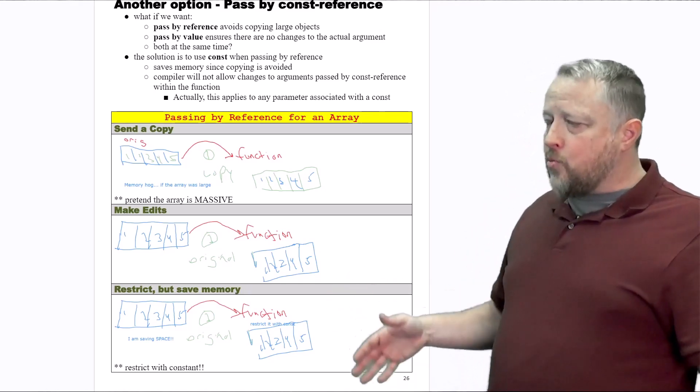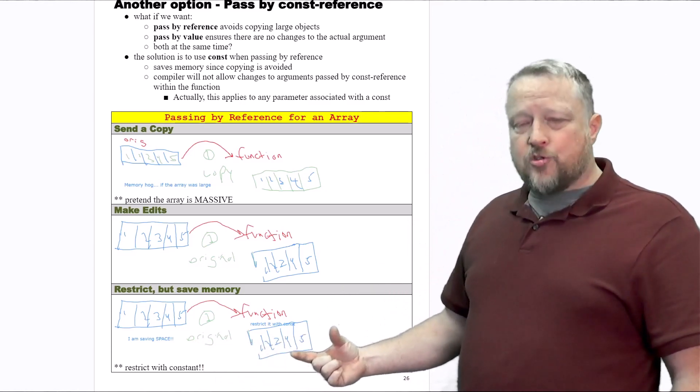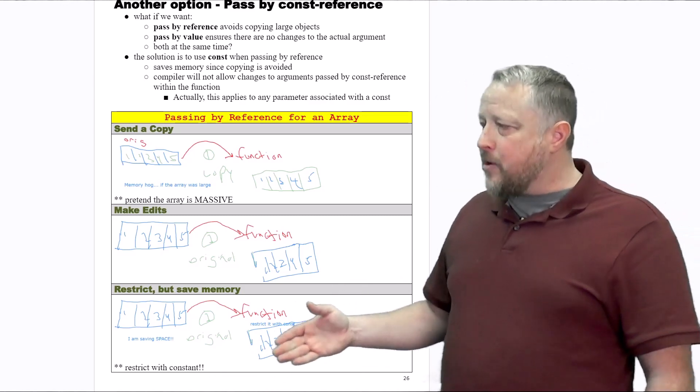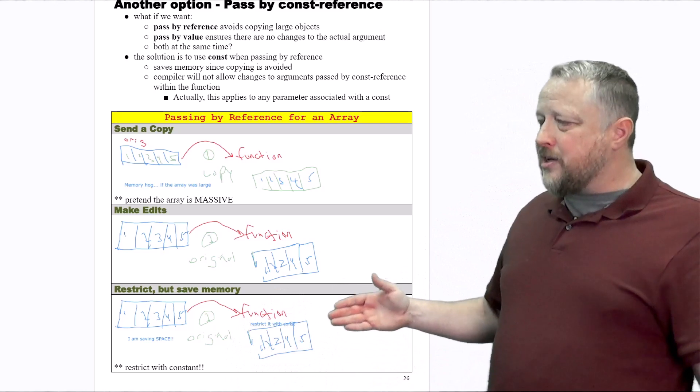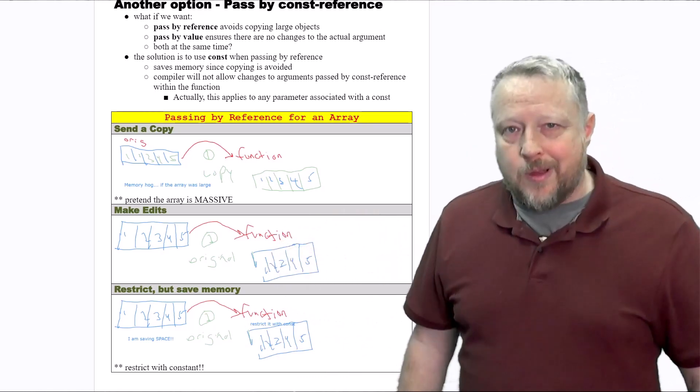The third way is to send the original, but restrain them or restrict them from making any changes, and that would end up using the const. So the const is a cheating way of saying, hey, here's the original, but you don't give them a pencil to change it.